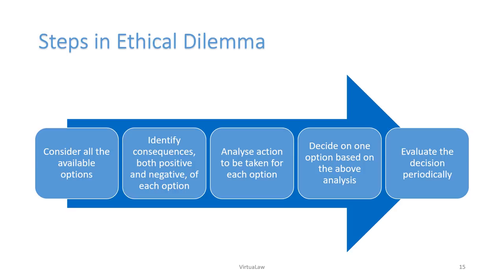Step 5 — whatever option you have taken, start evaluating it on a periodical basis. If you feel the option you chose is something you should not have opted for, go back to step one and start again. Identify all options, look at consequences, analyze the actions required, decide on one option, and then evaluate periodically. If the decision is turning out to be unethical, drop it and come back to step one to analyze the other available options. This concludes lesson number two.